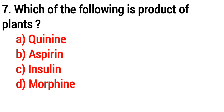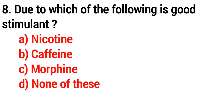Question number seven: which of the following is a product of plants? Answer: option A, quinine. Question number eight: which of the following is a good stimulant? Answer: option B, caffeine.